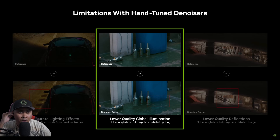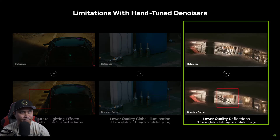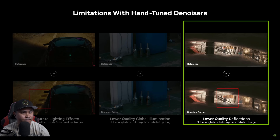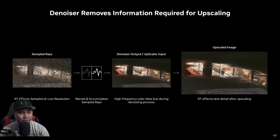You can also see in this example that the global illumination effects in this image were removed by the denoiser. Similarly, reflections can have lower detail because the denoiser blends information across the frame — the detail in this reflection was reduced because the denoiser blurred pixels together.